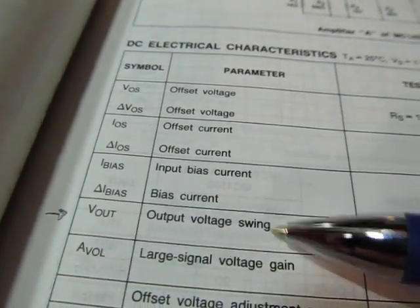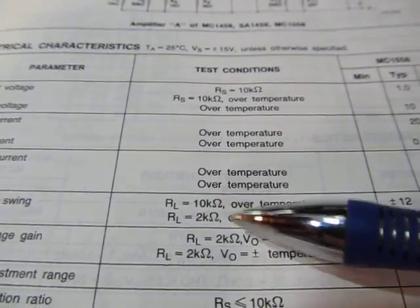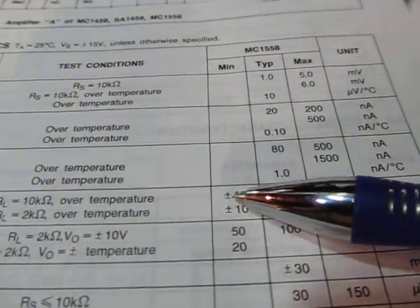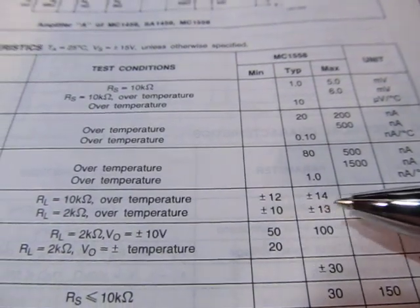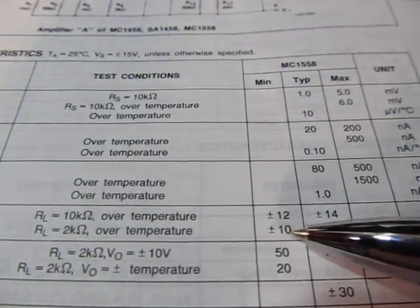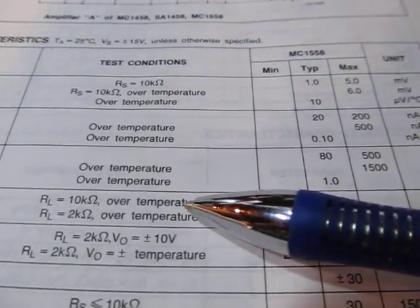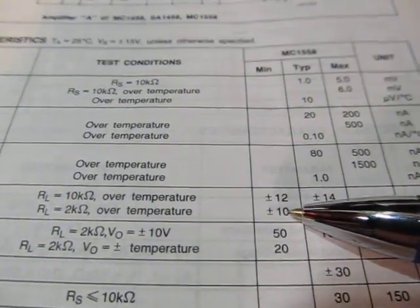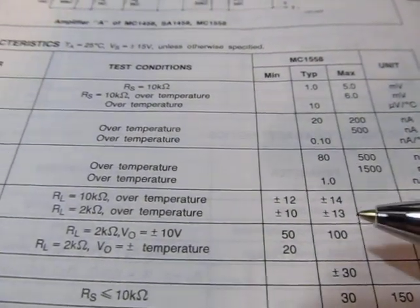Similarly, the output voltage swing, if we take a look at that, that has some similar numbers, a couple of different specs for different load resistance. But again, same numbers here. Plus or minus 12 volts. Plus or minus 13, 14 volts. So we're not guaranteed to get any closer than about 3 volts from the supply rail with a high impedance load. Worse than that with a low impedance load. But typically we'll get closer, but not always.